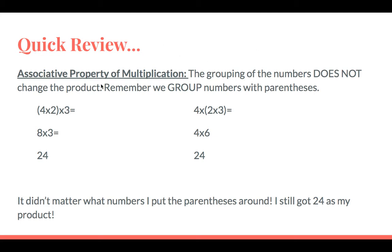The first vocabulary word is the associative property of multiplication. The associative property is the one that has parentheses. We use parentheses to group our numbers, and whatever numbers the parentheses are around does not change the product.